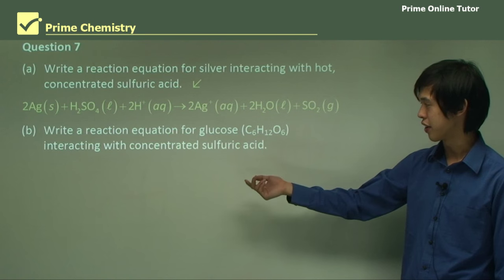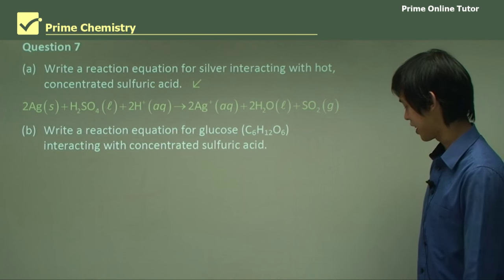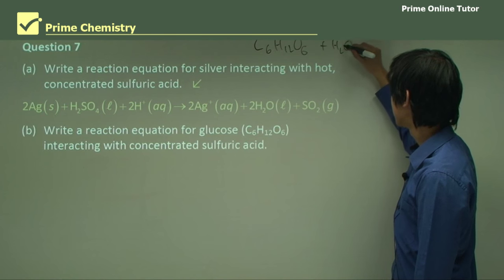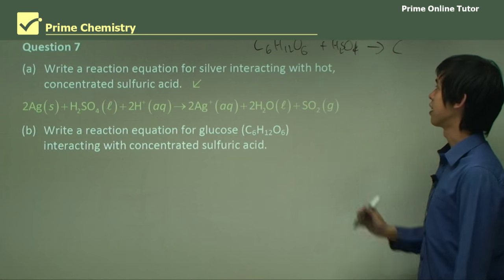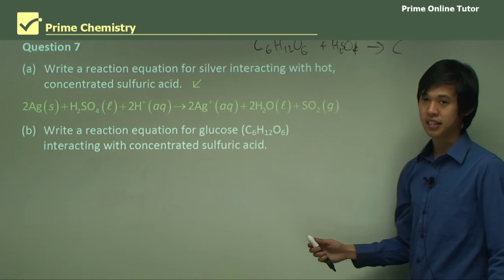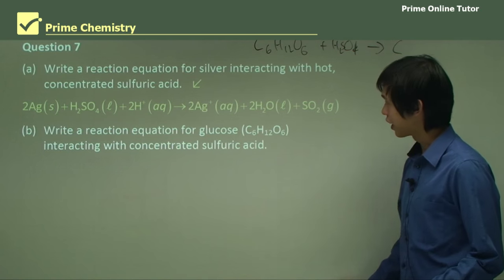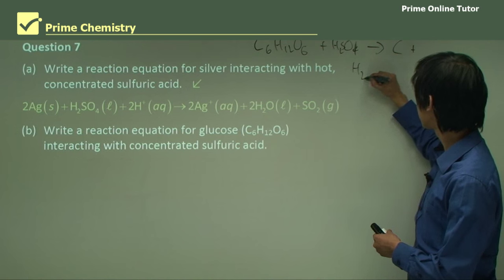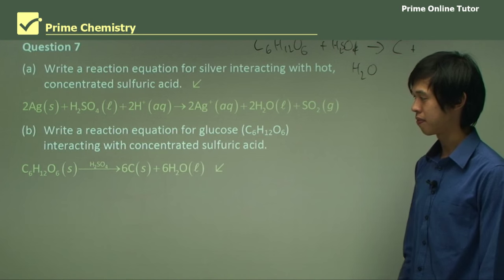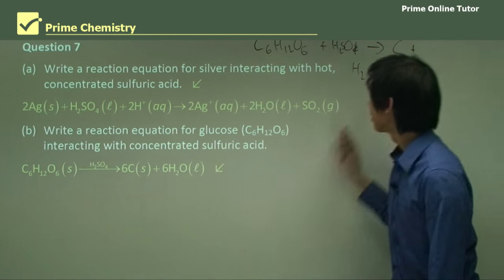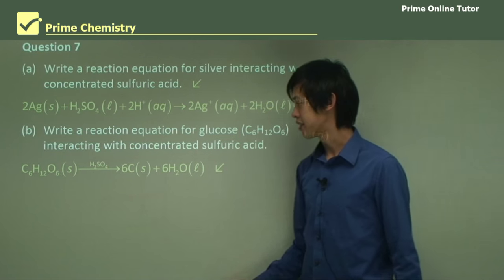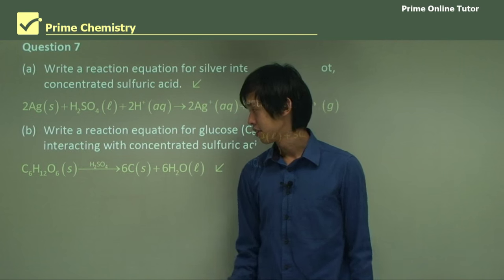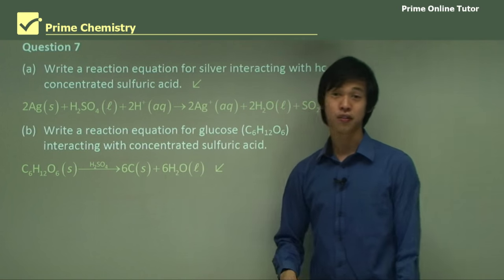Write a balanced equation for glucose reacting with concentrated sulfuric acid. We have C₆H₁₂O₆ and H₂SO₄, and we know it ends up as carbon. Since sulfuric acid always draws water out of things, water must also be formed. Balancing: glucose gives six carbons, and the remaining 12 hydrogens and six oxygens form six water molecules. The H₂SO₄ acts simply as a catalyst for this reaction.